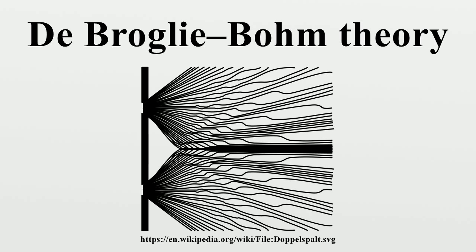De Broglie-Bohm theory is based on the following postulates. There is a configuration of the universe described by coordinates, which is an element of the configuration space. The configuration space is different for different versions of pilot wave theory. For example, this may be the space of positions of particles, or, in case of field theory, the space of field configurations.